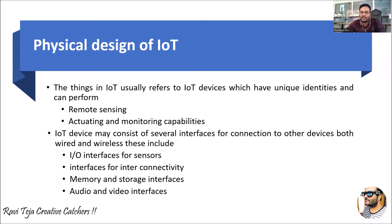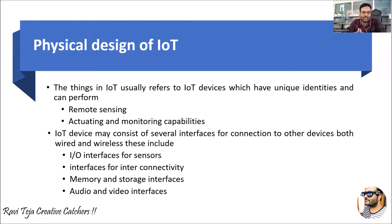These IoT devices consist of several interfaces for connection. If you are designing an IoT device for a small application, sensors will be selected and a controller chosen according to that application, and the output is taken based on the requirement. For complex IoT devices, some will be wired and some wireless depending on the distance. Most IoT devices will have input/output interfaces for sensors, interfaces for interconnectivity, memory and storage interfaces, and audio and video interfaces — all of which we are going to see in the coming block diagram.